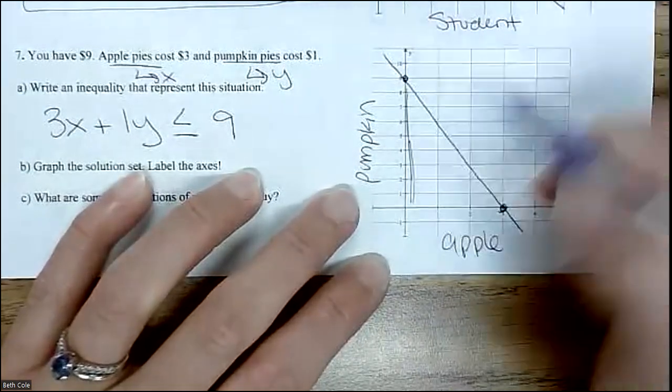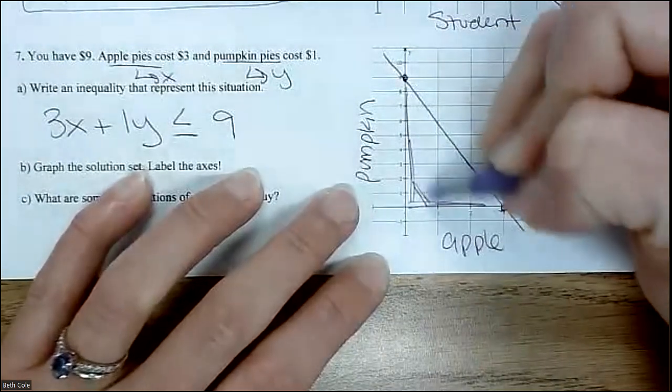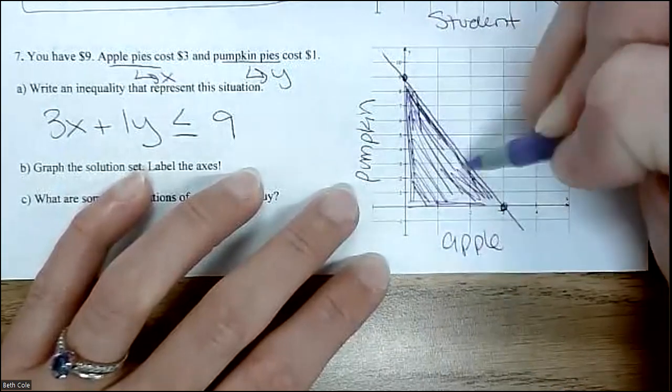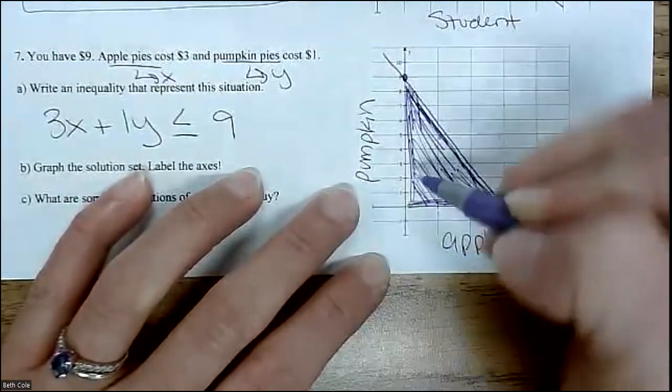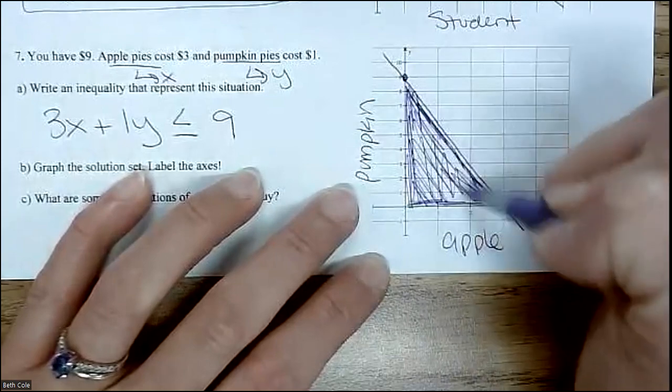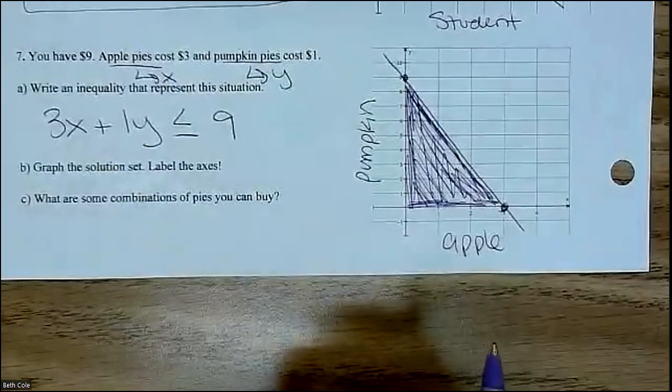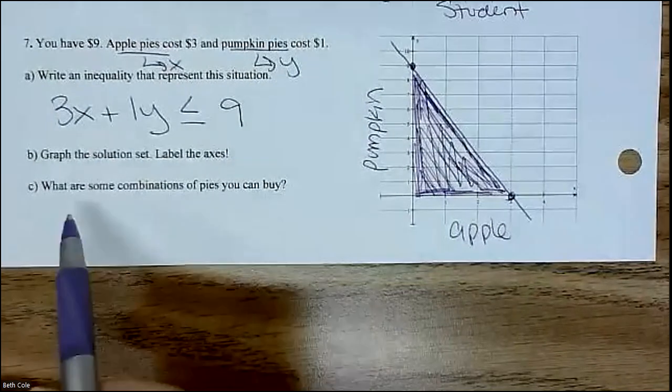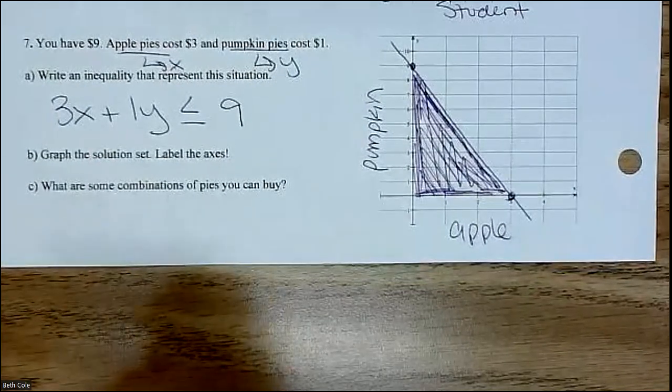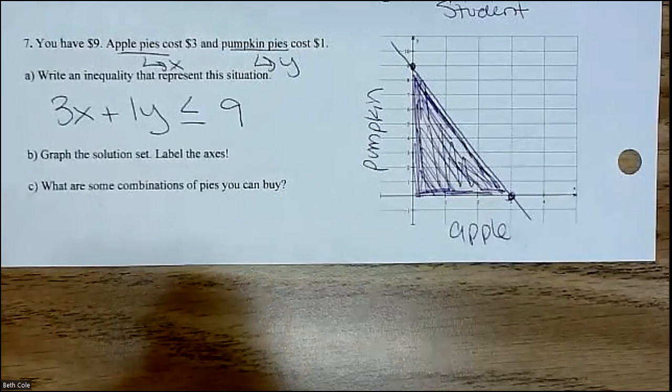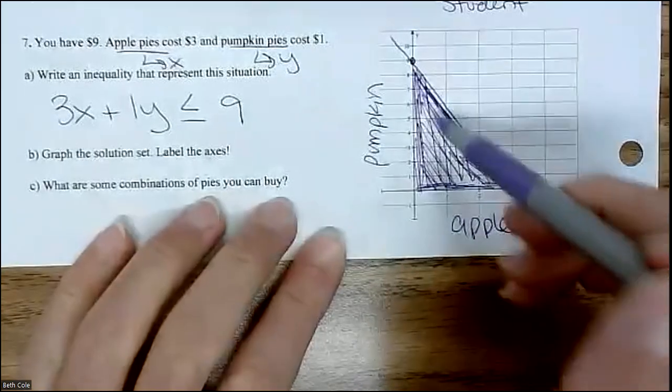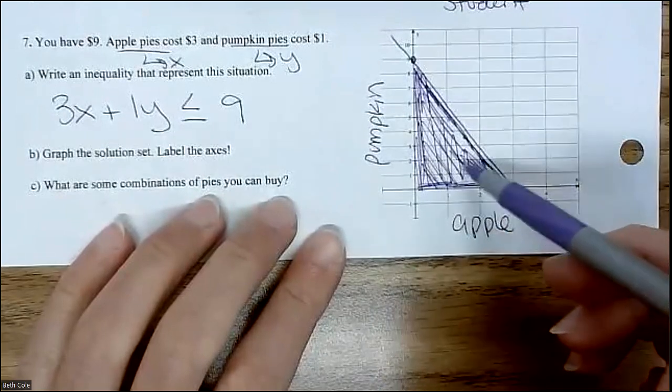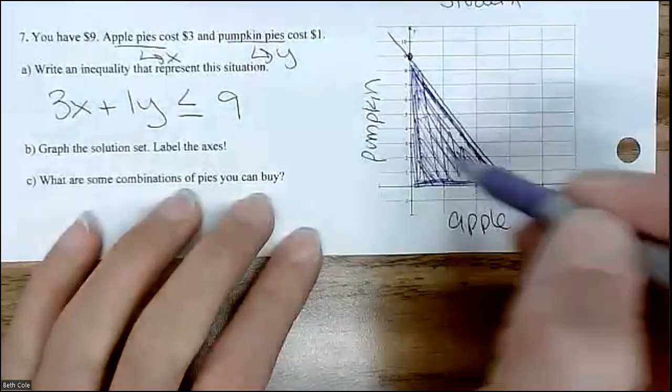Now, notice I'm not going further than the axes, though. Why can't I go further than that? Like negative money? Yeah. Like you're not going to have negative money. Now, what are some combinations? What are some combinations of pies you can buy? Any points in this triangle or on the line would be a combination of pies you can buy. These are all part of the answer.